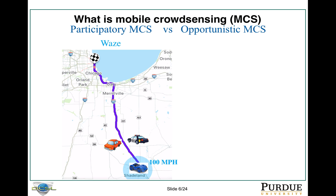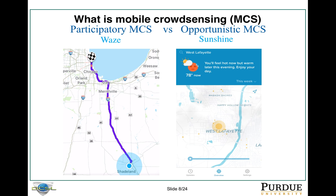Then the blue car, who is driving very fast, saw this information when approaching the position where the police is. He slows down and avoids a ticket. That's a typical example of participatory mobile crowd-sensing. For opportunistic mobile crowd-sensing, like the Sunshine app here, it does not require user interaction. It will do some periodic sensing to get information from the sensor. Basically, everything is automatic and no user interaction is needed.